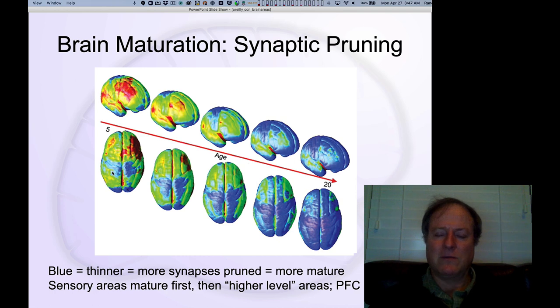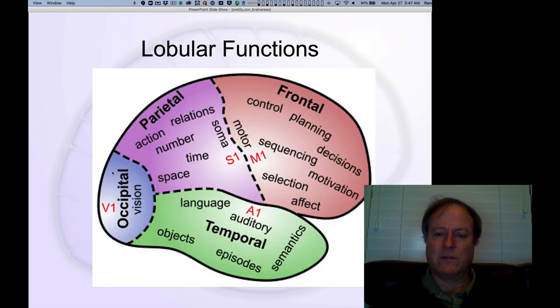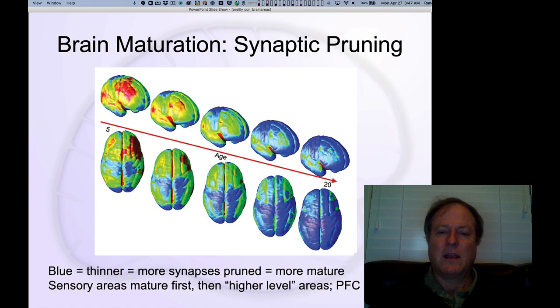And so these waves that we've understood of how these sensory and motor areas radiate out to determine the overall function of these different brain areas is also evident here in the synaptic pruning waves. The early parts of those sources and synaptic pruning are pruned first, and then the higher level in between areas get pruned last.